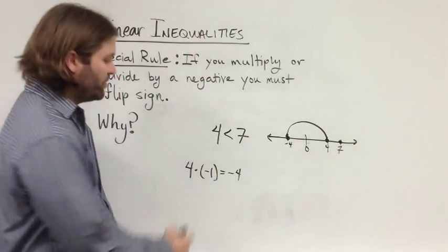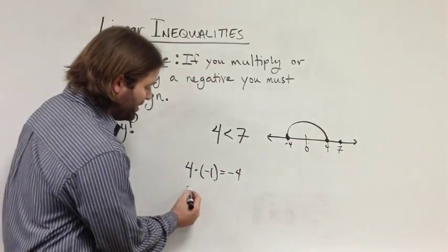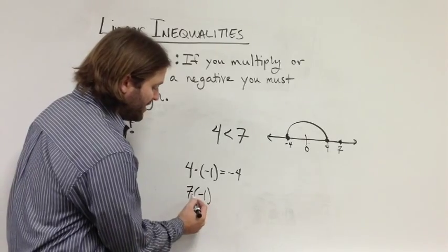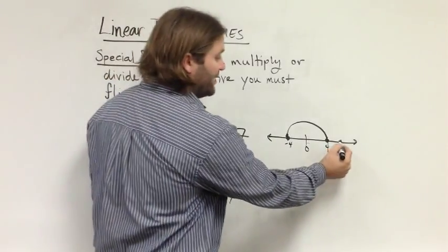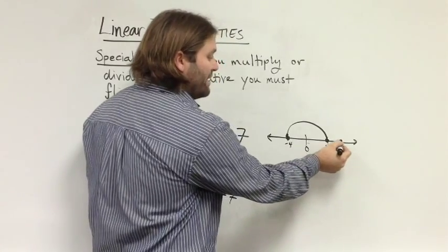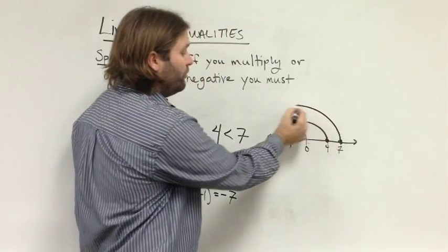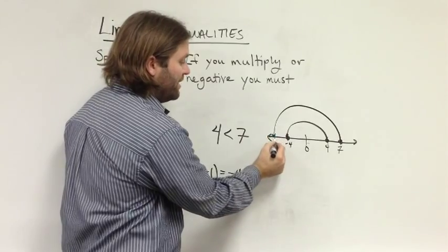The same thing happens when we multiply 7 by negative 1. Here, 7 times negative 1 is equal to negative 7. So, once again, we take the number 7, and multiplying it by negative 1, we'll flip it across, and that will become negative 7.